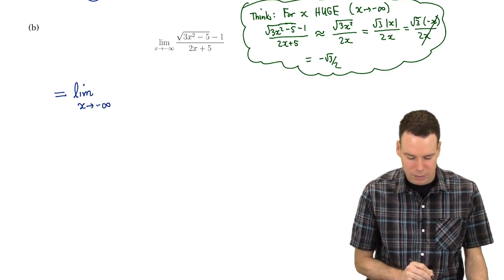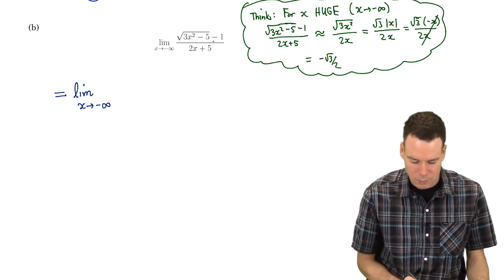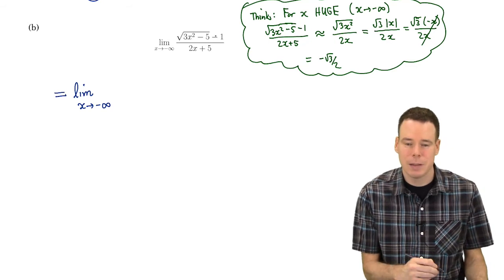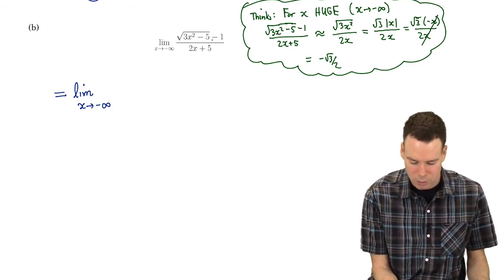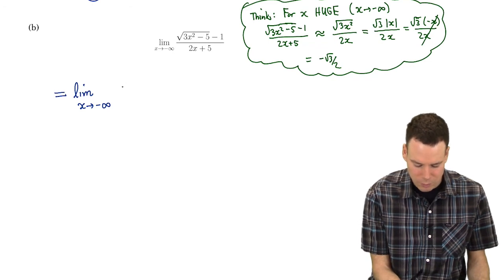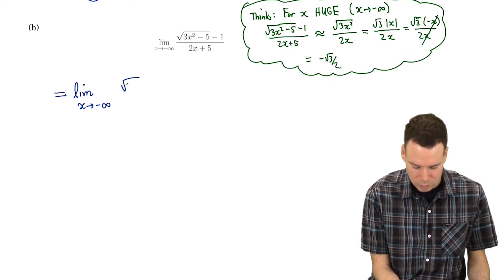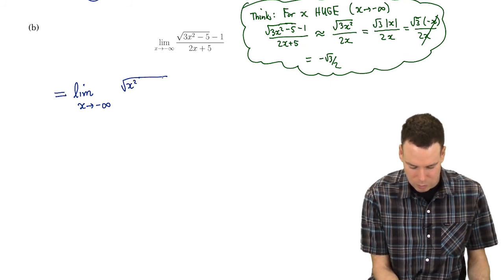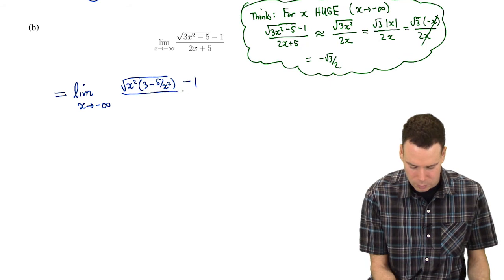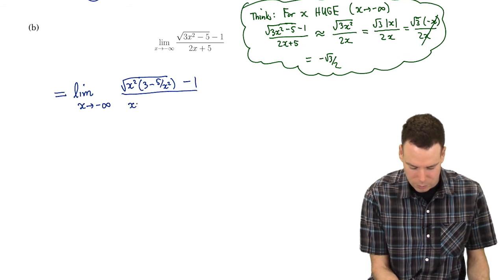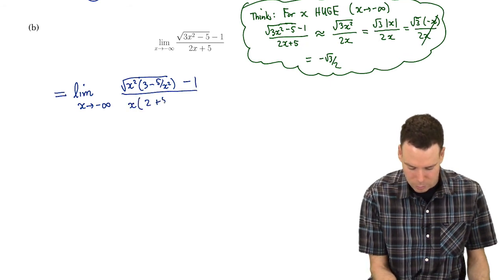So we're going to take the limit as x goes to negative infinity of this expression here. I'm going to play the same game I did in the last example. I'm going to try to push all the x's into the denominators of corresponding pieces. So I'm going to factor out an x squared from underneath the square root sign. If I factor out an x squared, maybe I'll do it in a couple of steps here. 3 minus 5 over x squared minus 1 all over, and I'm going to factor out an x from everything in the bottom.